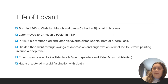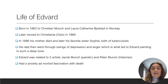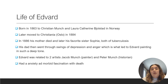Edvard was born in 1863 to Christian Munch and Laura Catherine Bolstad in Norway. Later in his life, he moved to what we know today as Oslo in 1884. In 1886, his mother and later his favorite sister Sophie both died of tuberculosis. After that, his dad went through frequent swings of depression and anger, which led to Edvard painting in such a deep tone, and just led him to want to paint.